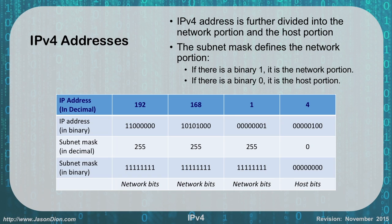If we look at a subnet mask and we have a one there, that's part of the network portion. If we have a zero, we're part of the host portion. So for instance, in this example I have a subnet mask of 255.255.255.0. That tells me every time there's a 255, that translates in binary to eight ones. So in this case, my network portion is the first three octets and my host portion is the last octet. So my network is the 192.168.1.something network, and the host on this one happens to be the .4.